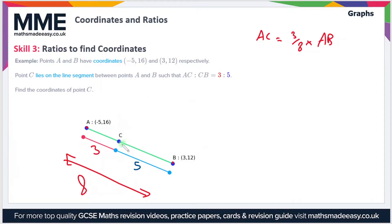In order to find out where coordinate C lies, we're going to find the distance of A to B, multiply it by three-eighths to get the distance of A to C, and then add that distance to point A. That should give us the location of point C.